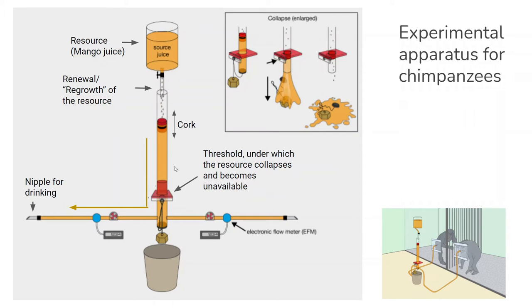All these mechanisms are pretty much the same, and instead of tabs, the chimps directly drank the mango juice from these nipples here. So again, for the chimps, it was the challenge to keep the level of the mango juice inside the cylinder above the threshold level, even though they wanted to drink as much as possible from it.